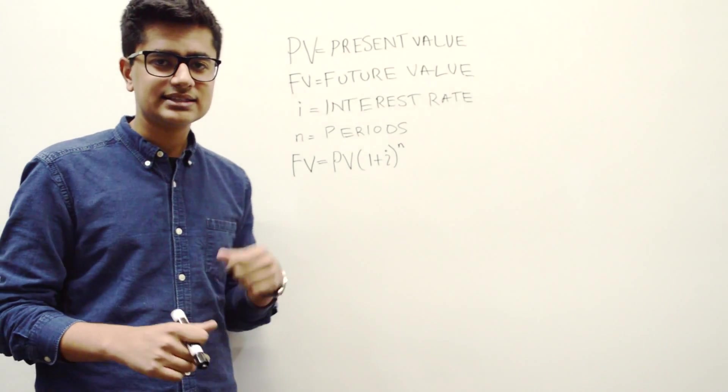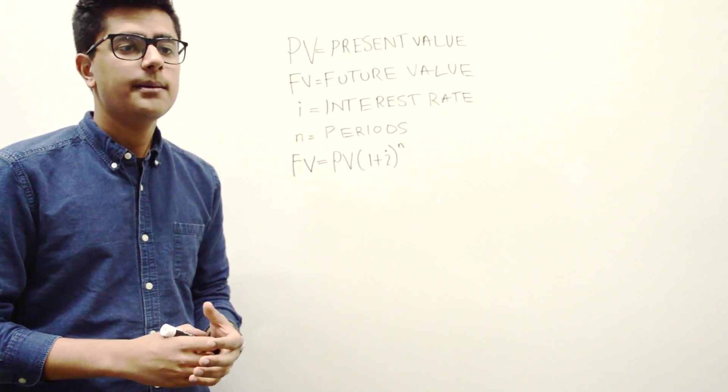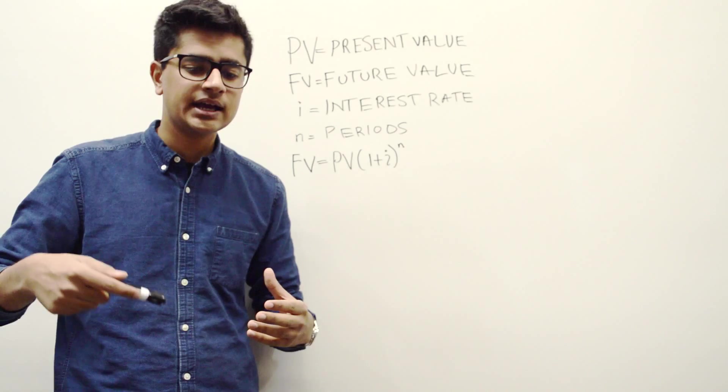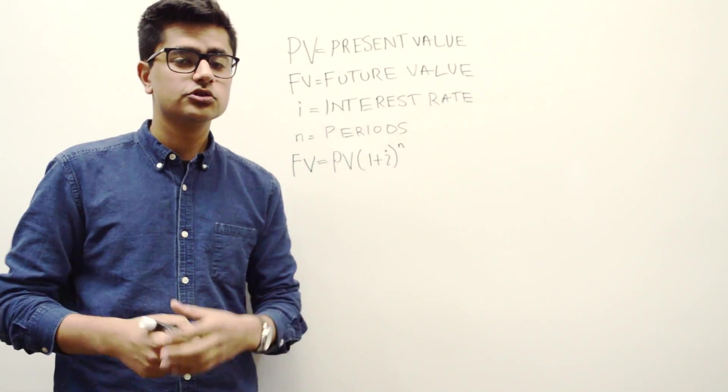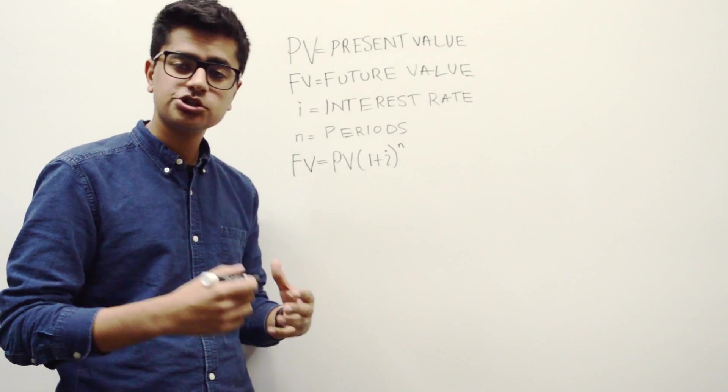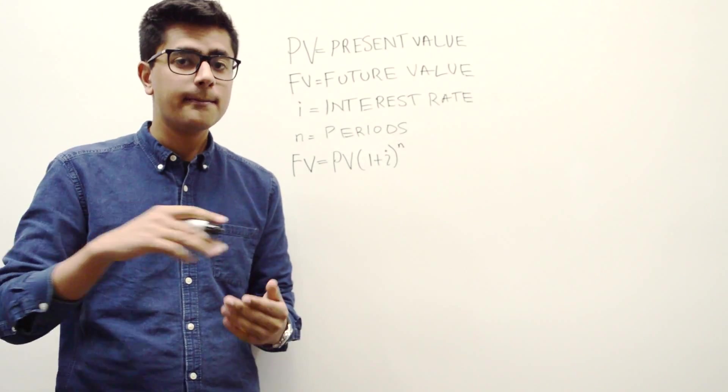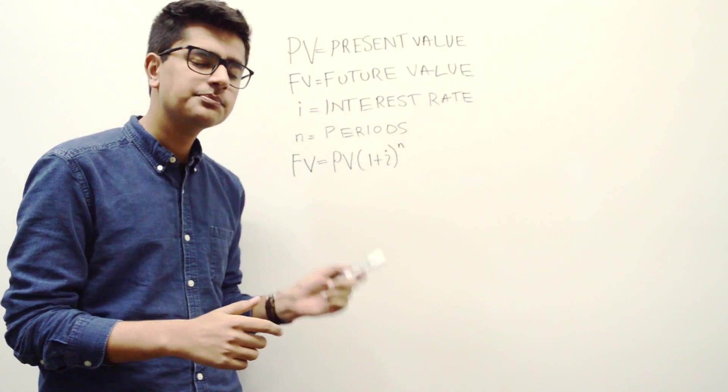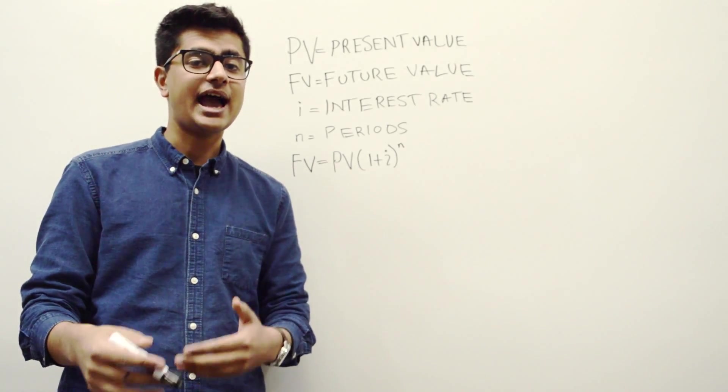And the final one is the number of periods. So basically this refers to how many times your money is compounded. So in the previous example, I said 10%. That essentially means that if you deposit your money in a bank every year per annum, they will add 10% to the money that you already have in your account.